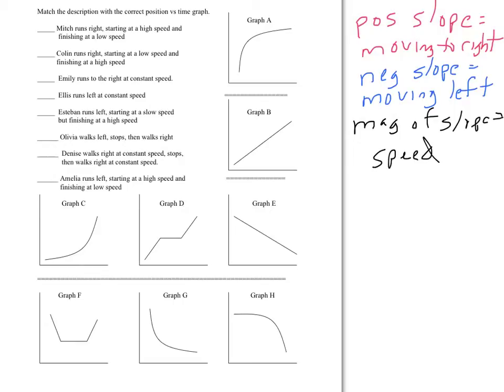So the steeper the line, the faster it's going. The more shallow, the slower it's going. Before you even look at the matching, just look at the graphs themselves and write down the key facts of them.